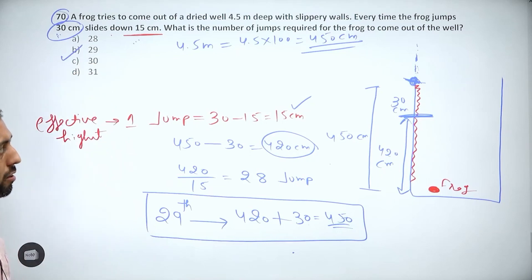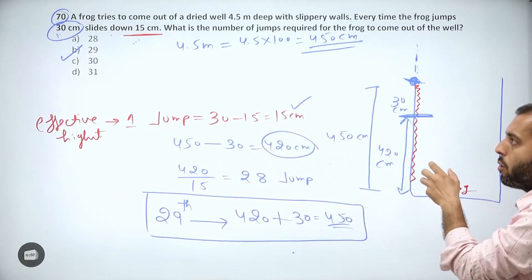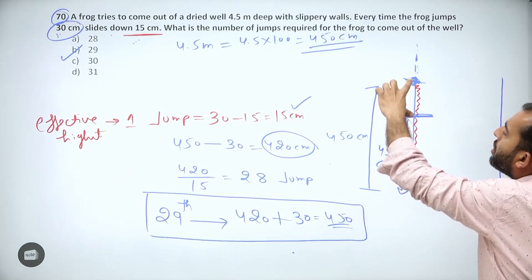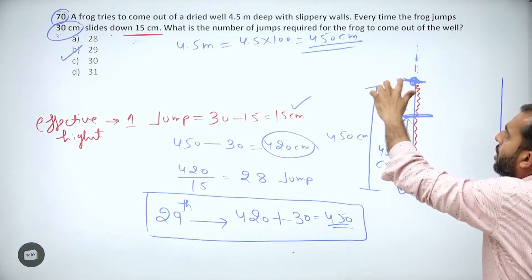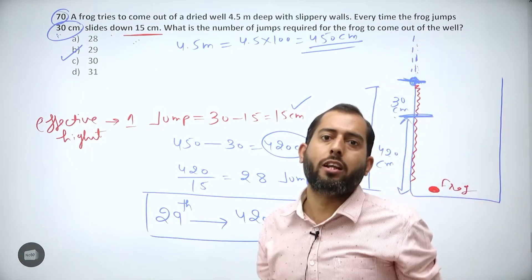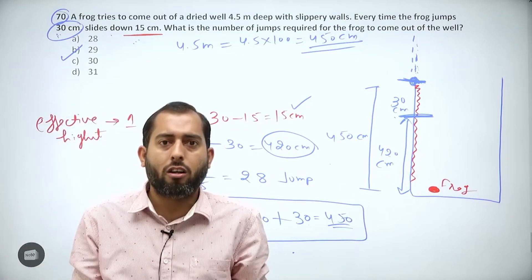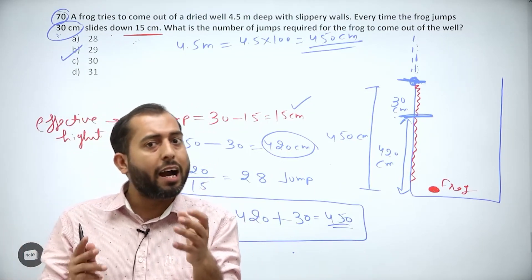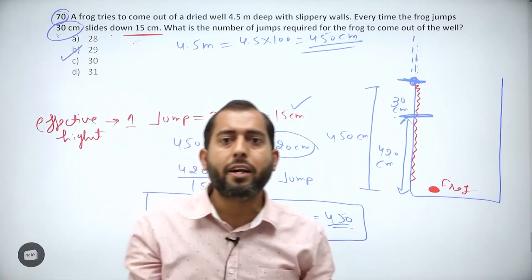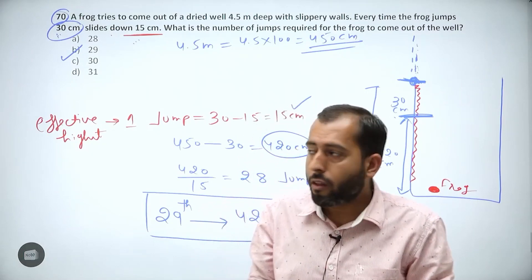To repeat: once the frog jumps the final 30 centimeters from 420, it gets hold of the top edge. After that point there are no slippery walls, so there is no slipping down. This is the key point to keep in mind while solving problems where increment and decrement are happening at the same time.